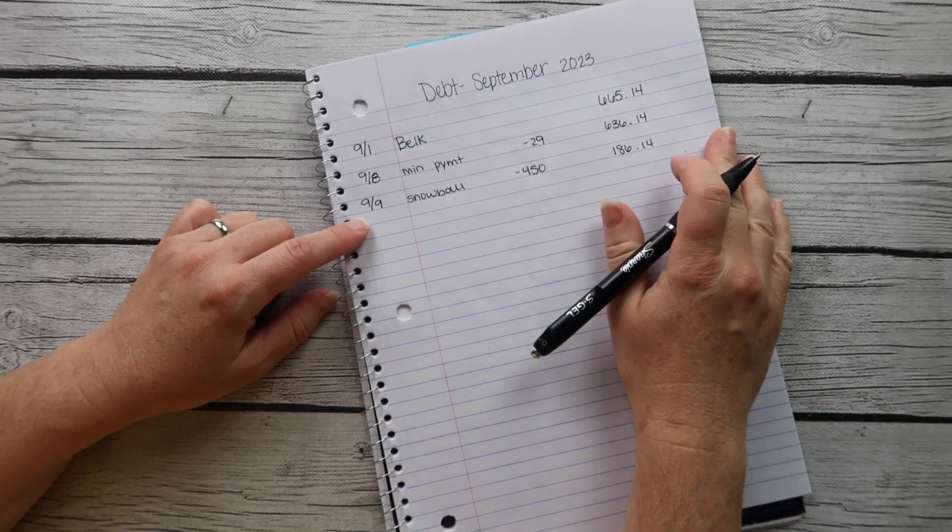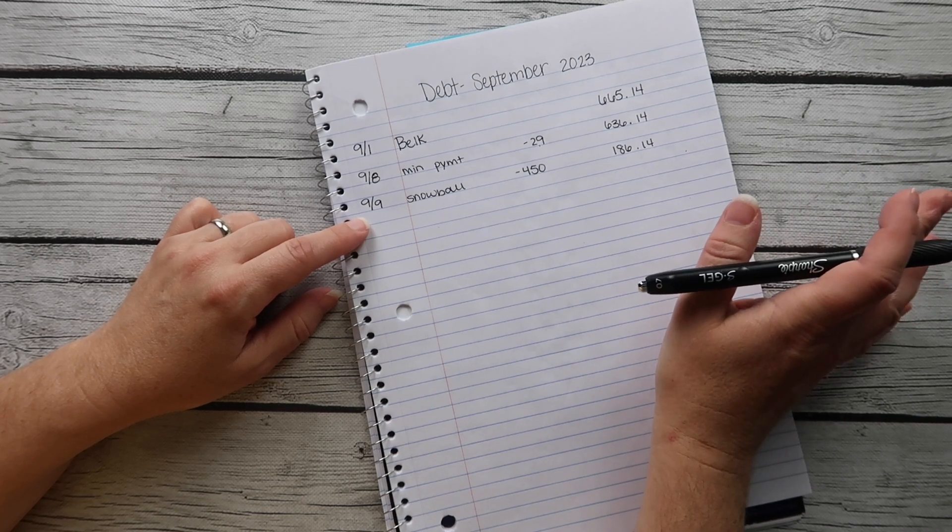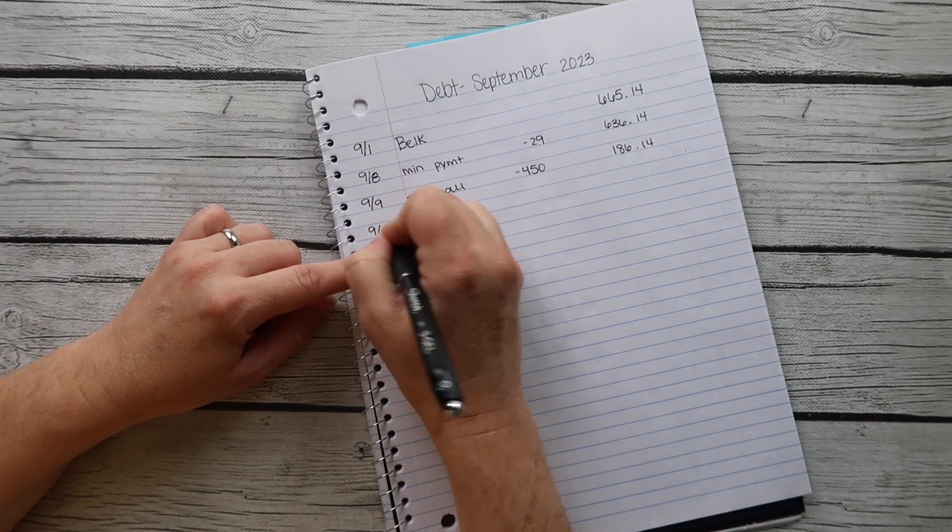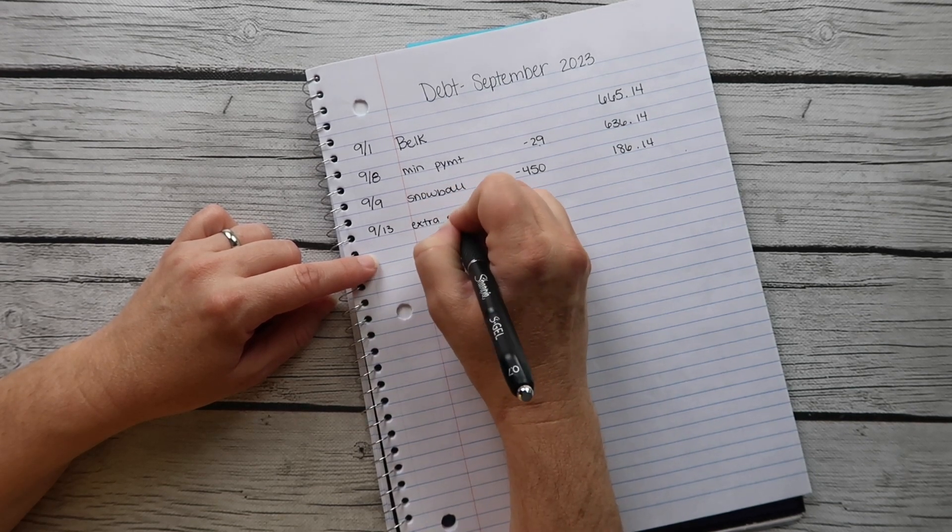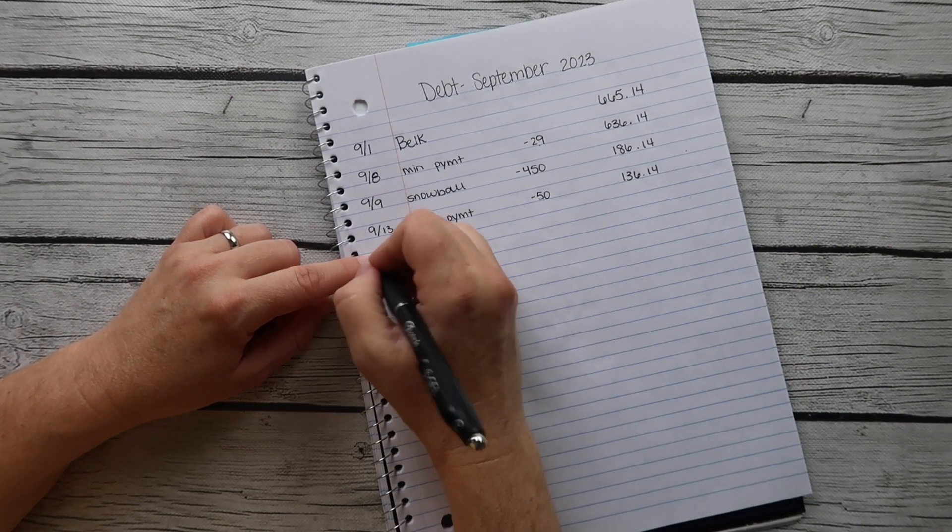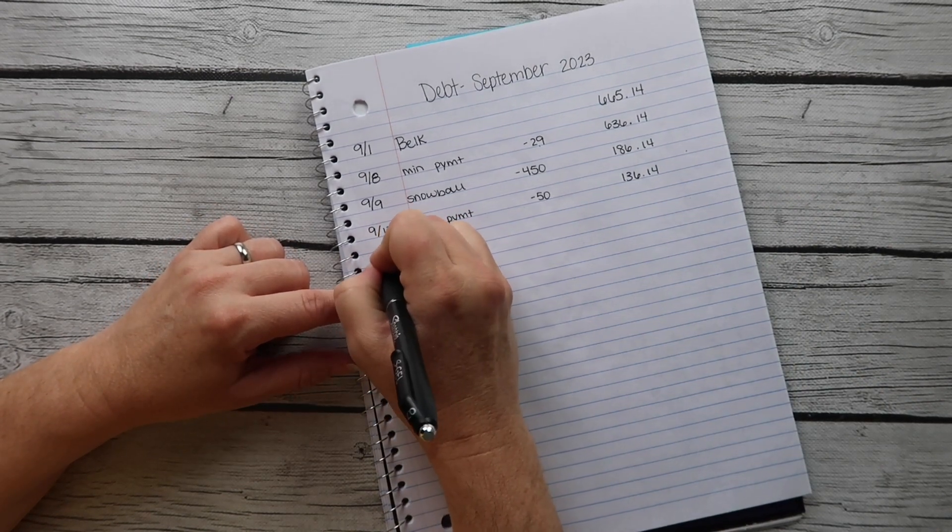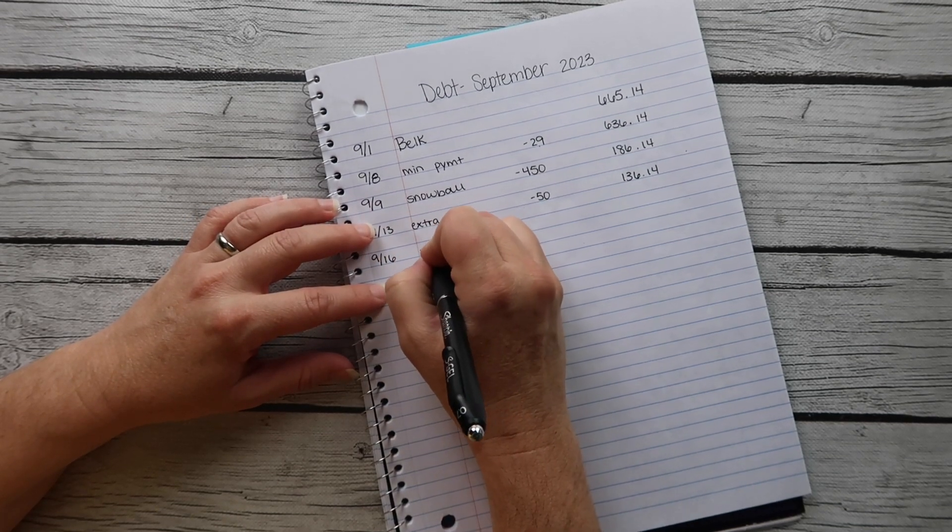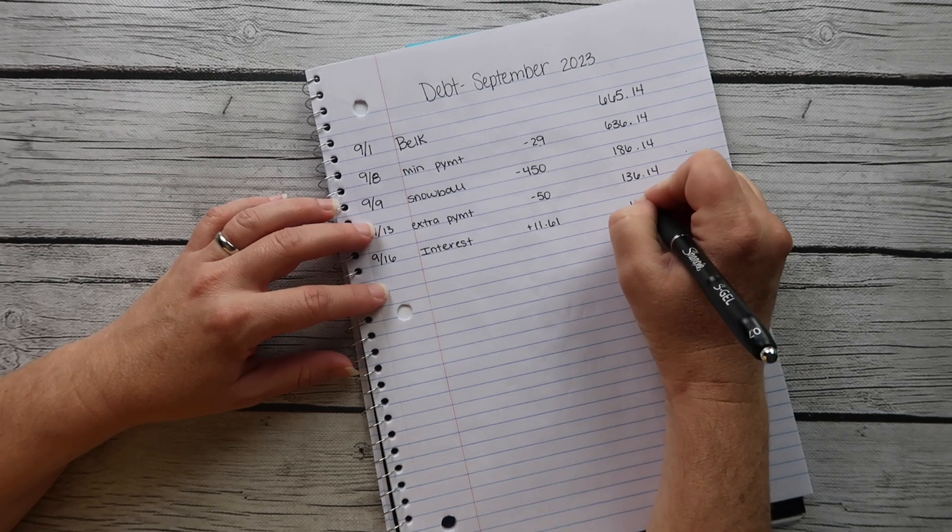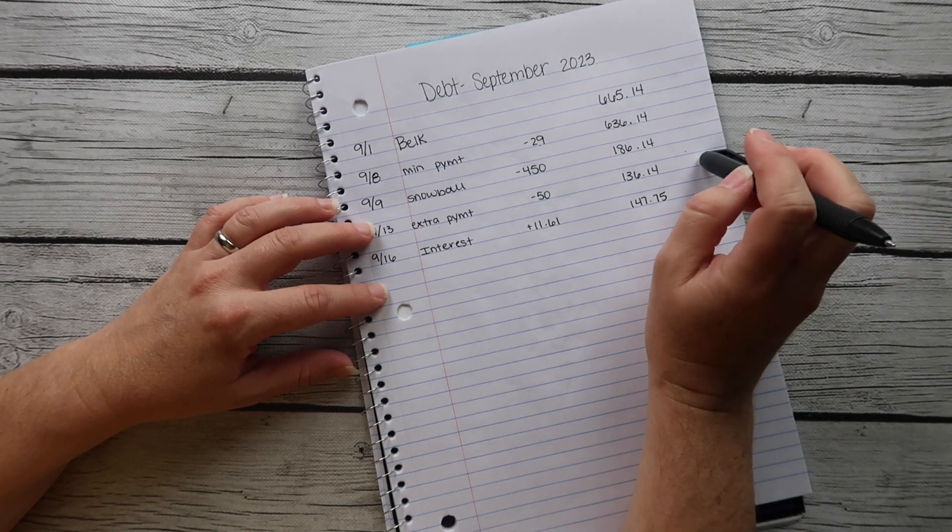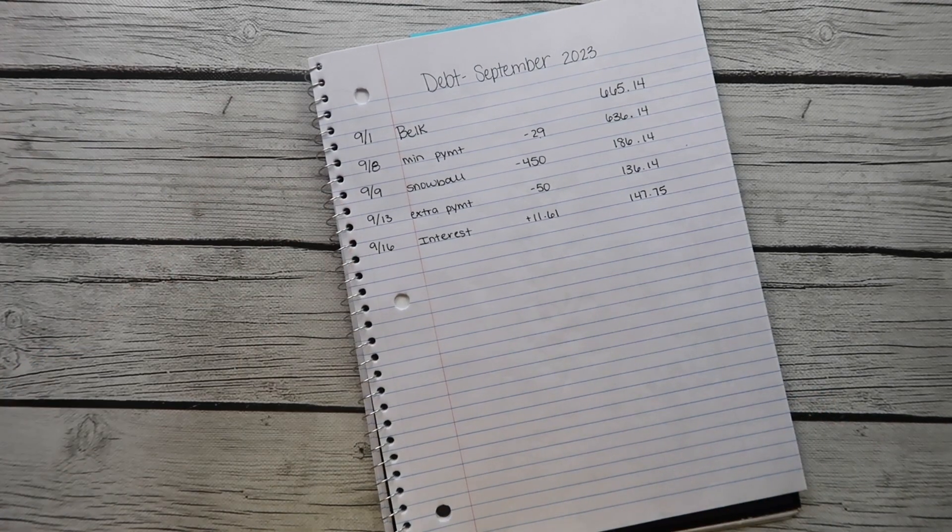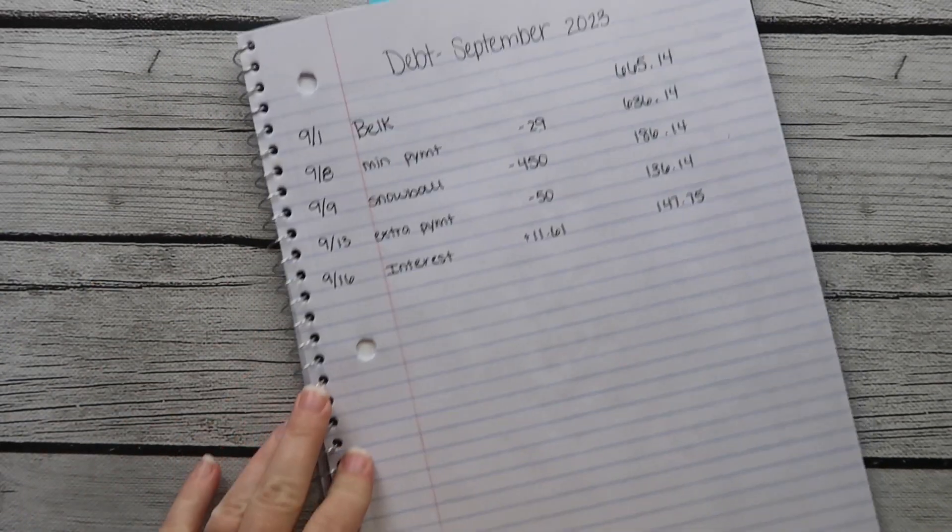I'm trying to with side money that I'm making every week pay at least $50. That's the goal. So on 9-13 we made an extra payment of $50 which brought it down to $136.14. I just got the bill on 9-16 so interest was added at $11.61 which brought it up to $147.75, but I sold at a consignment sale this week with kids clothes.